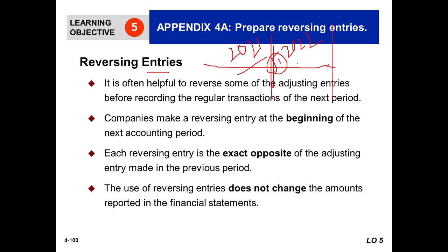When we start our transactions for the next year, companies make a reversing entry at the beginning of the next accounting period. The reversing entry is the exact opposite of the adjusting entry made in the previous period. Using reversing entries does not change the amounts reported in the financial statements.